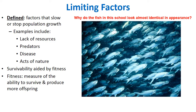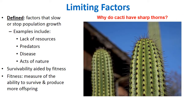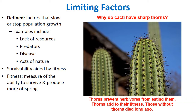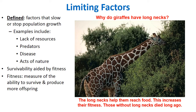Why do fish in a school look almost identical? Because that appearance produces high fitness — individuals that looked different had low fitness and died out long ago. Why do cacti have sharp thorns? Because thorns prevent herbivores from eating them, adding to their fitness. Why do giraffes have long necks? Not from stretching — but because a long neck helps them reach food. Giraffes with genetically longer necks had an advantage, reproduced, and passed on that trait. Those with shorter necks were eliminated by natural selection.